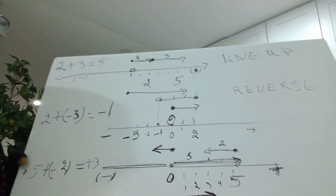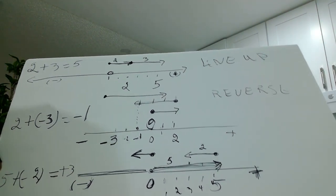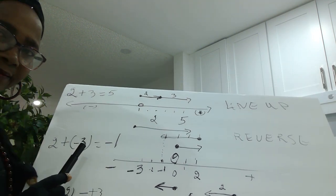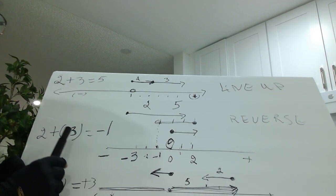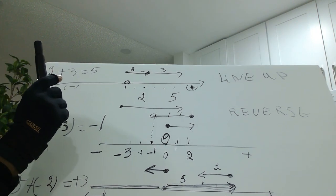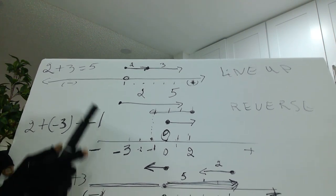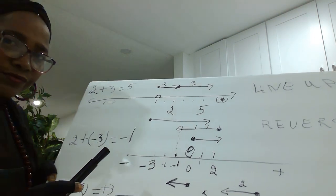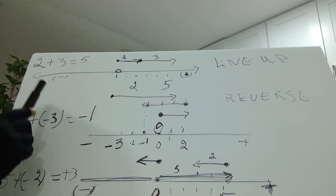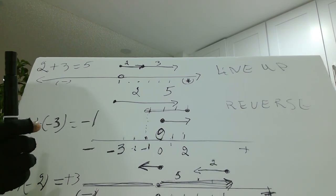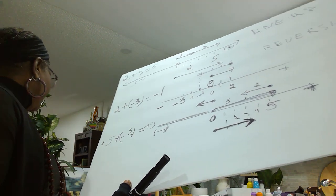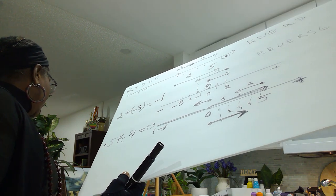We are talking about content numbers. Integers — see the definition in the first video; this is the second video. The first definition... I can say quickly the book is about an 'Everything Guide into Algebra.'